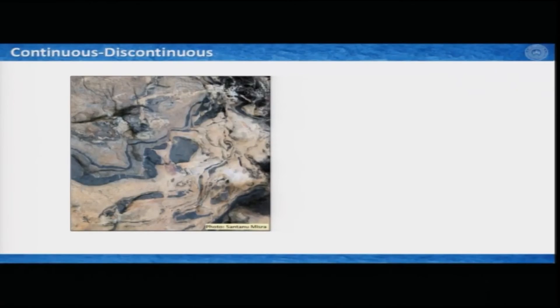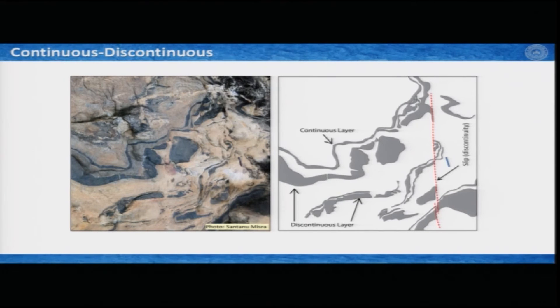Another example: in a complex structure, some layers marked by arrow heads are continuous while others are getting discontinued. Also, there is a discontinuous line separating layers by a slip. There are many ways to produce discontinuity, and it is important to understand what is the reason for the discontinuity in the structure you are looking at.